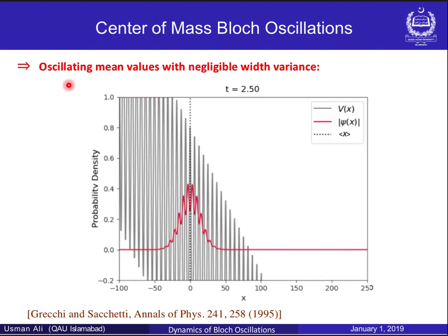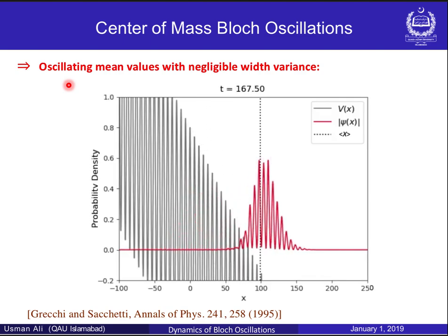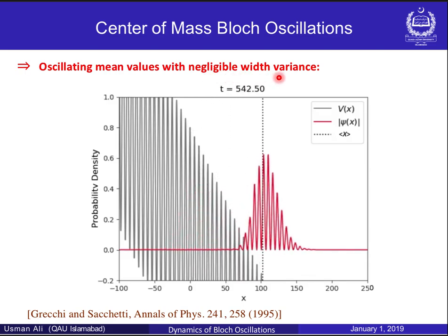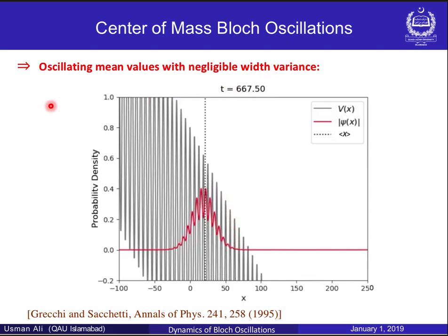For a broad Gaussian wave packet, the center of mass oscillates in time while the width remains constant. This is what we call center of mass Bloch oscillations.